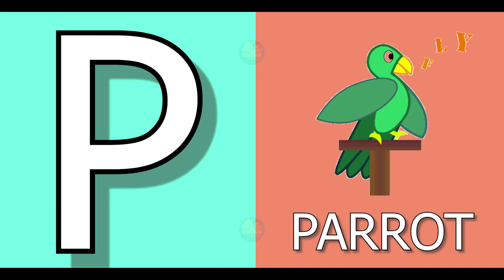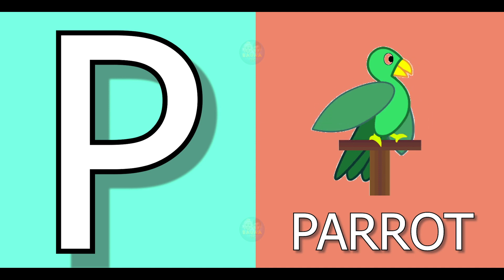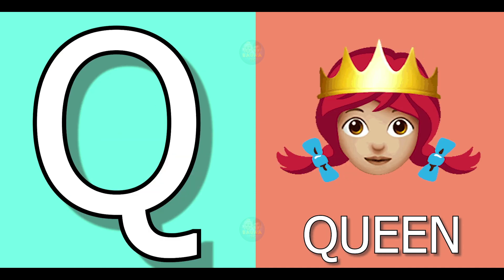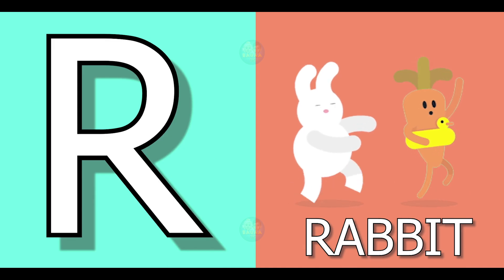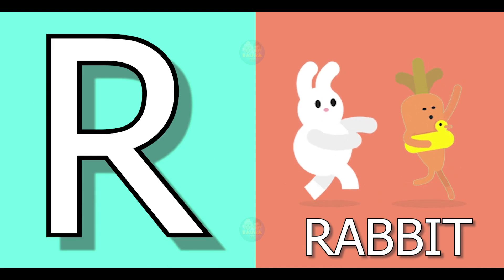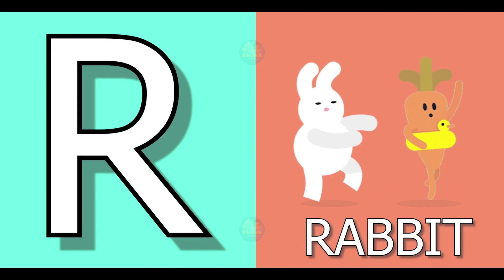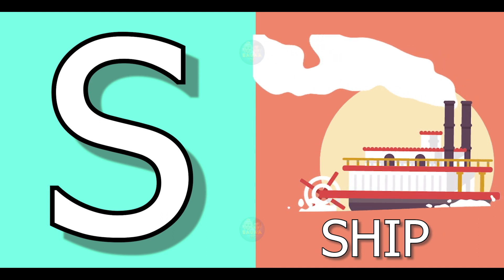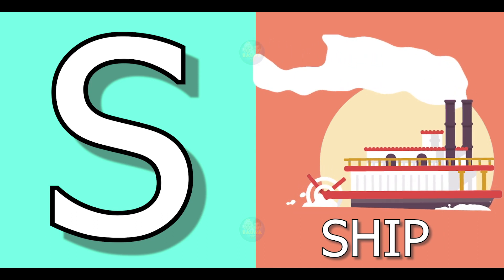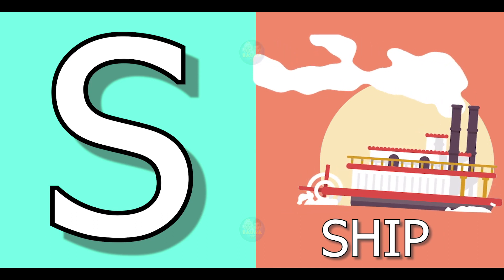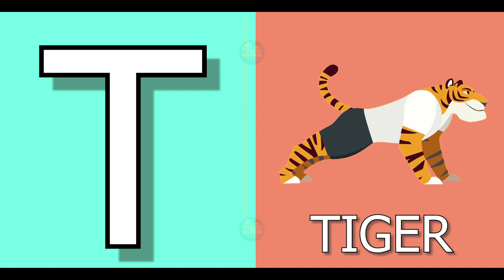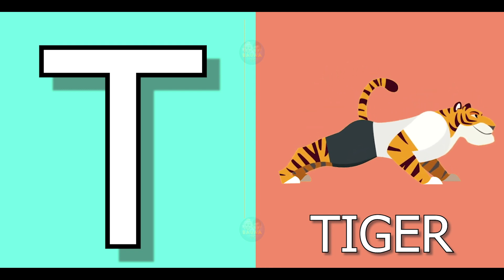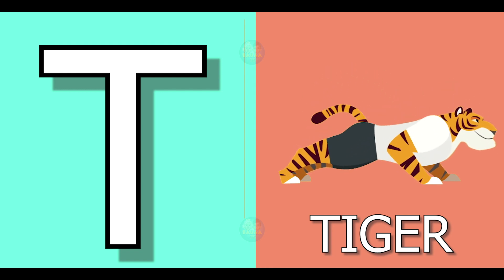P for parrot, parrot means tota. Q for queen, queen means running. R for rabbit, rabbit means khargosh. S for ship, ship means jahaj. T for tiger, tiger means bug.